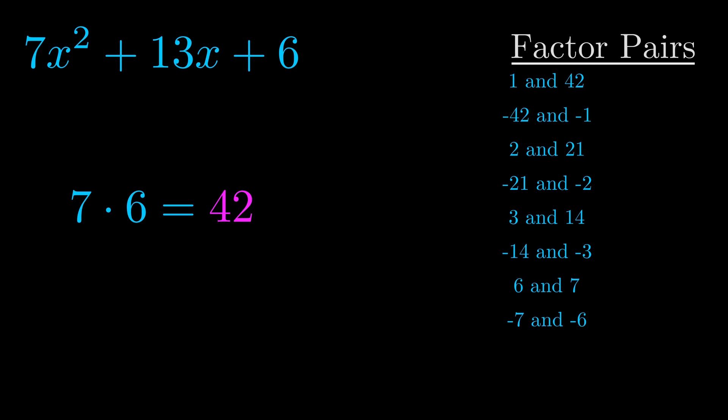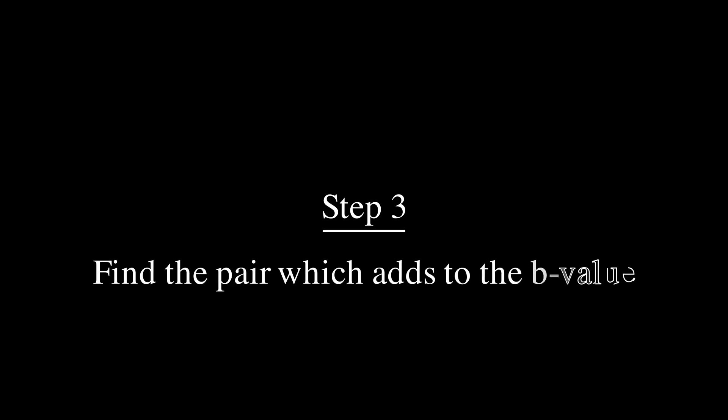Now once you have these factor pairs, the goal is to find which of these pairs adds to the b value. The b value is the coefficient on the x term.